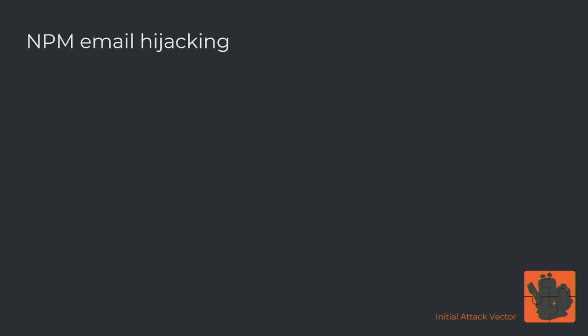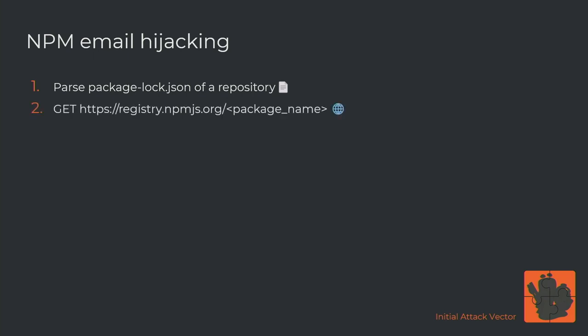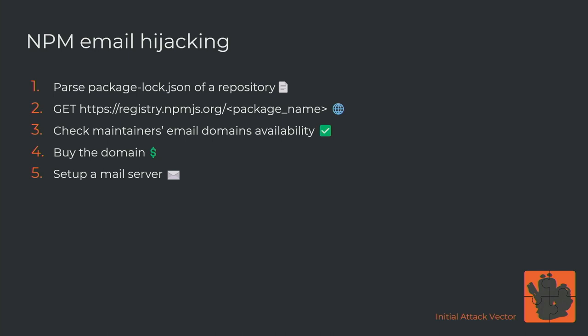The next attack vector is NPM email hijacking. We parse the package-lock.json of a repository, getting all the packages the target is using. For each package, we send a request to the NPM registry to get the manifest. Inside the manifest we find the maintainers and their emails. For each email, we check if the domain is available for purchasing - basically the maintainer forgot to renew the domain, or it expired. If it's possible to buy the domain, we buy it, set up a mail server, redirect emails to our inbox, and reset the maintainer's password. This is only possible on accounts without two-factor authentication, but still a lot of accounts lack it.